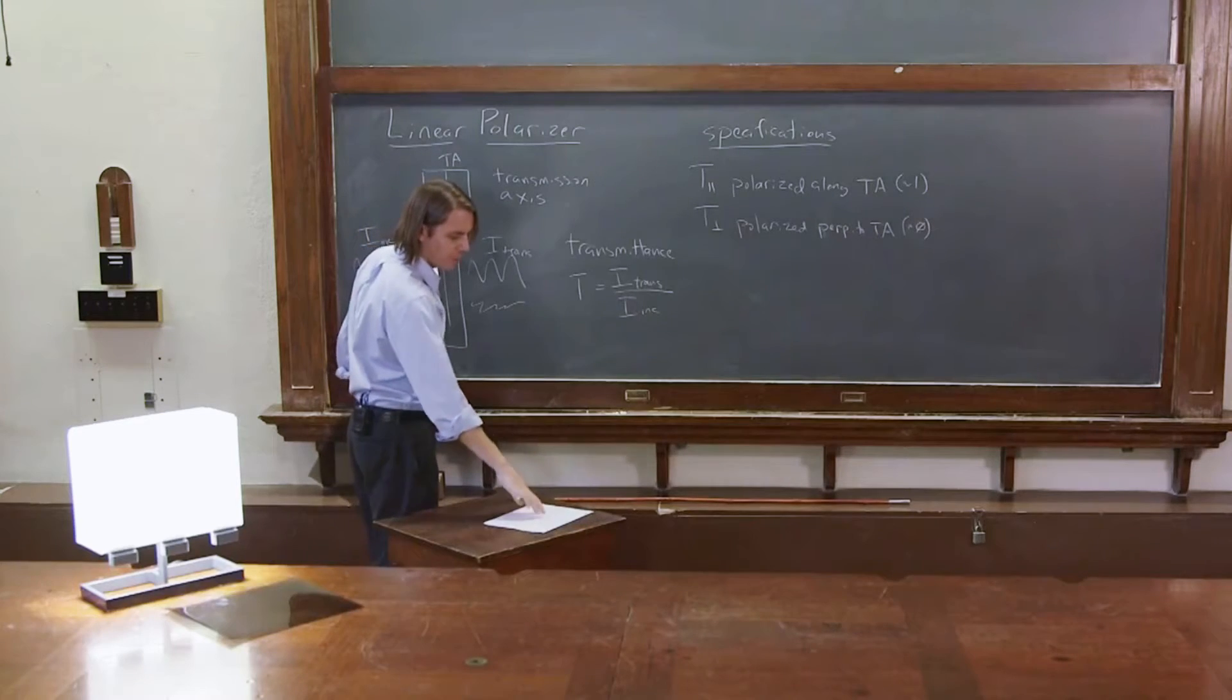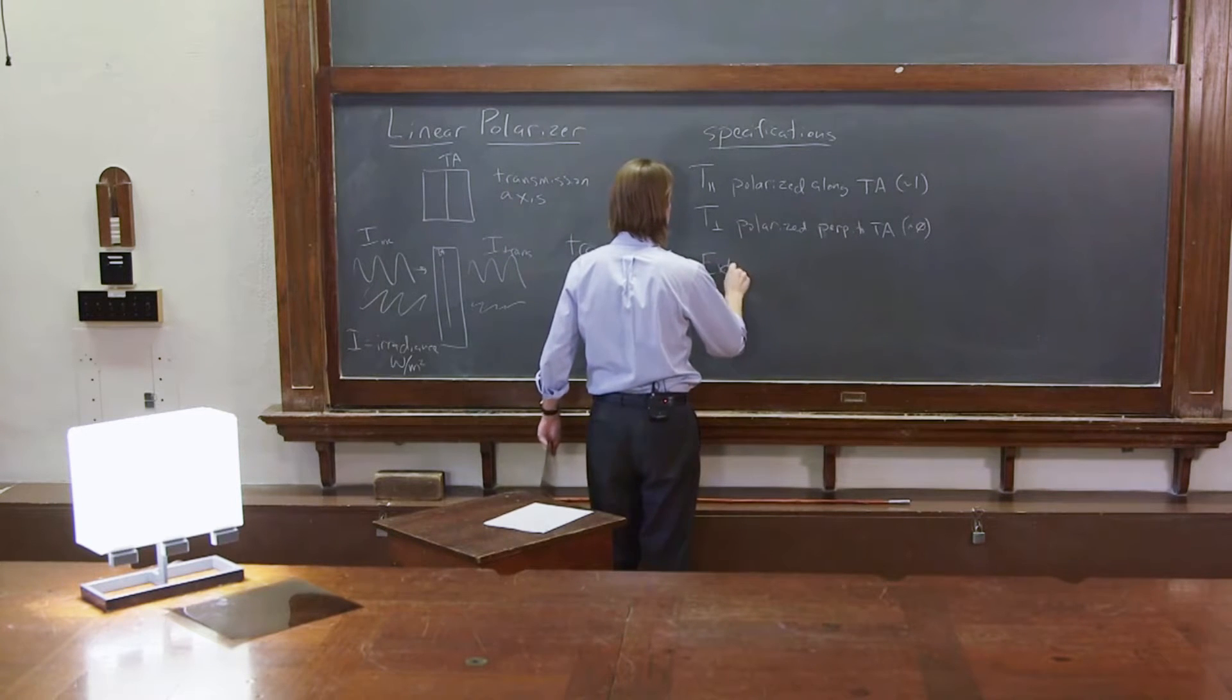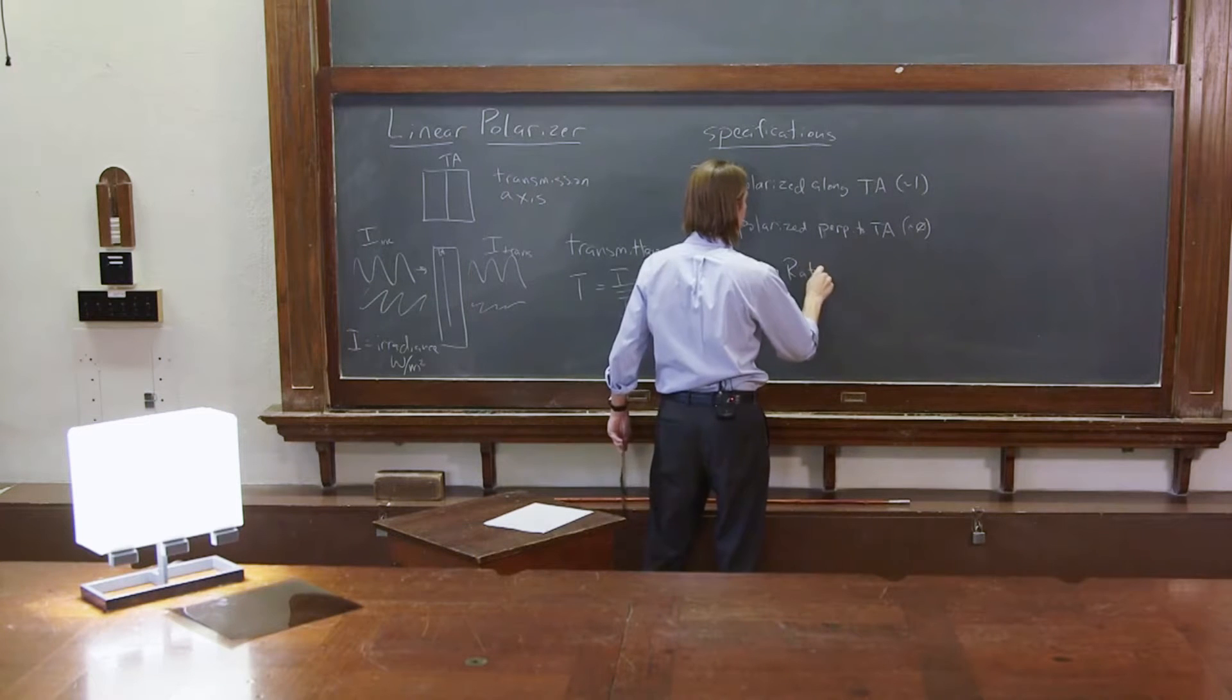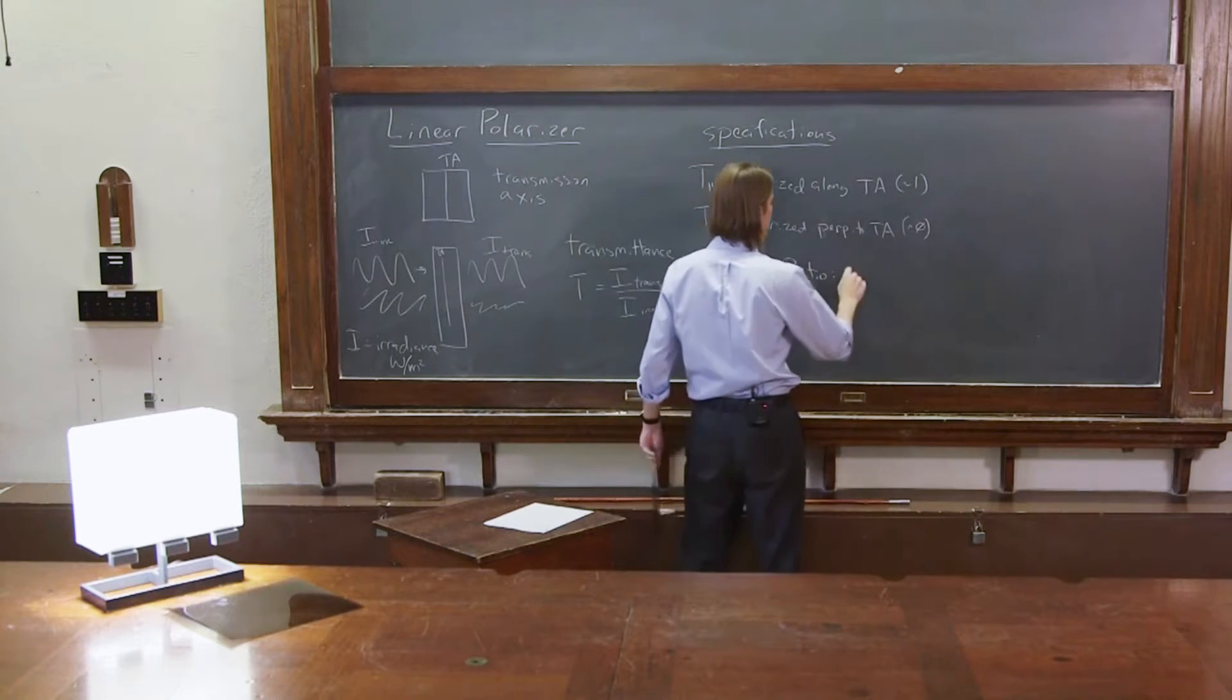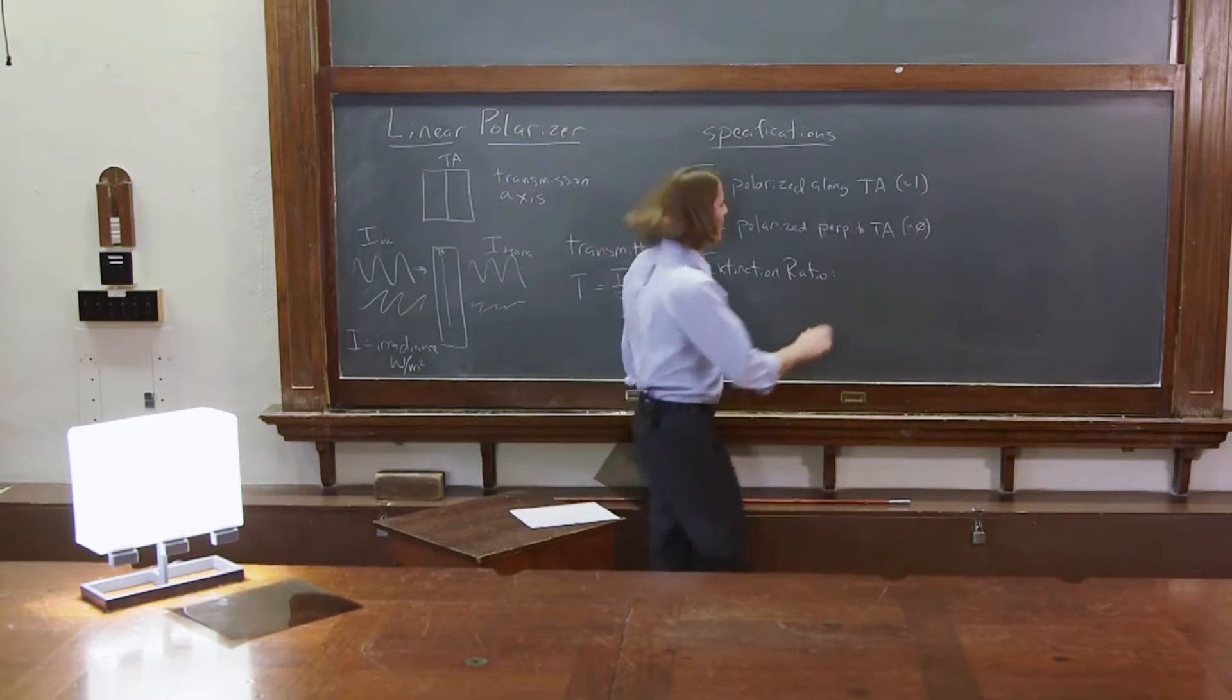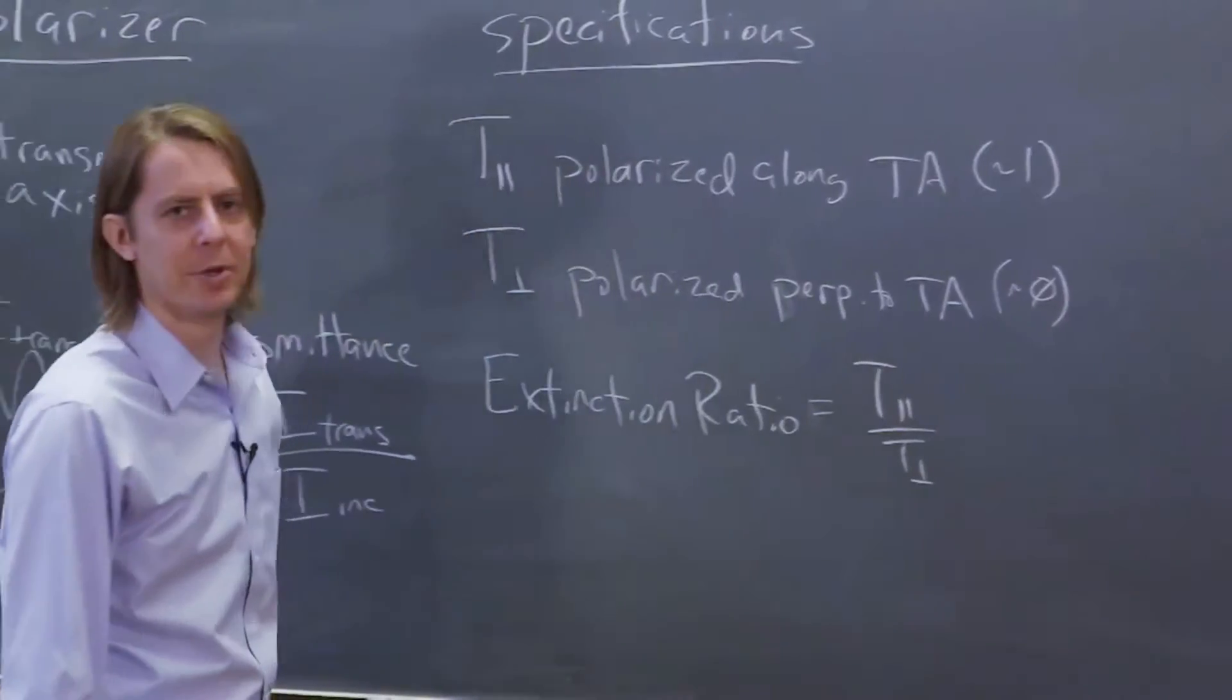Sometimes you'll see other sort of combinations of these things. There's the extinction ratio is one. The extinction ratio equals, I don't really have a symbol for it. It equals T parallel over T perpendicular.